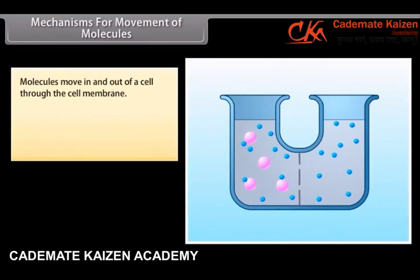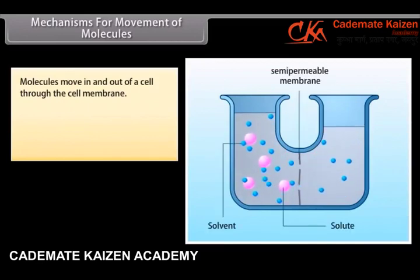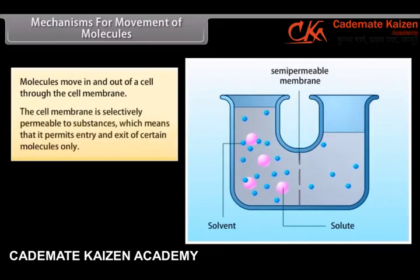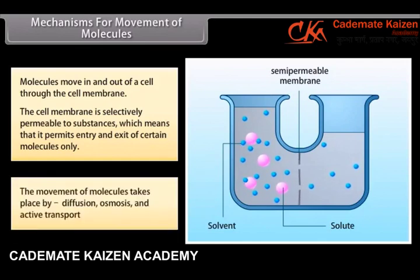Molecules move in and out of a cell through the cell membrane. The cell membrane is selectively permeable to substances, which means that it permits entry and exit of certain molecules only. The movement of molecules takes place by diffusion, osmosis and active transport.